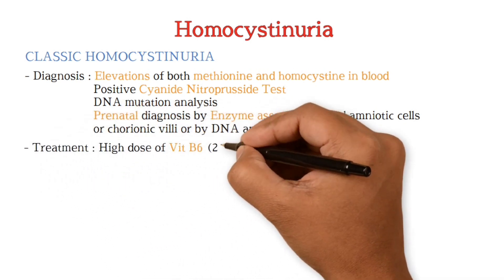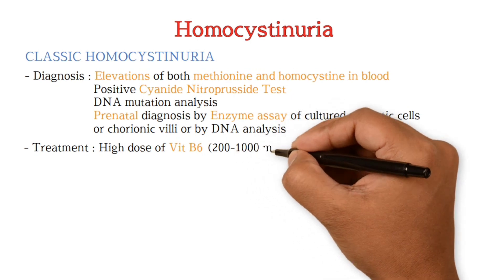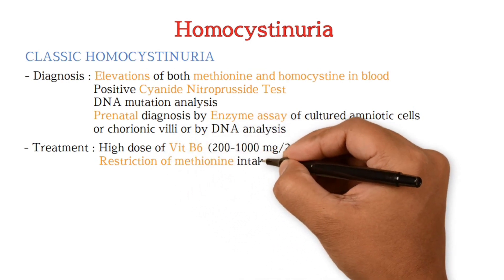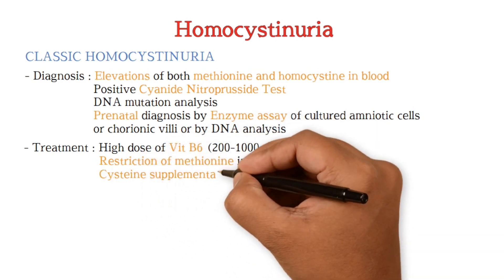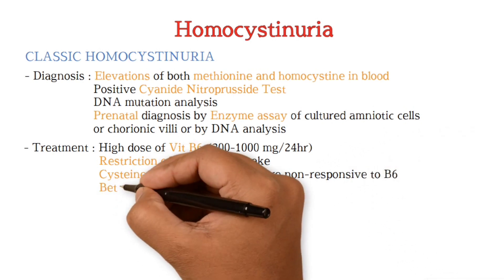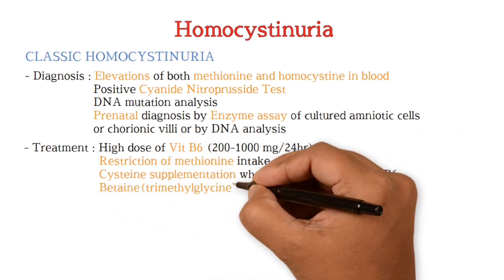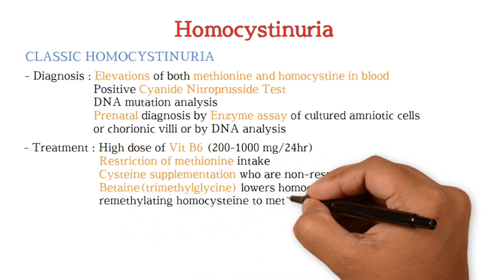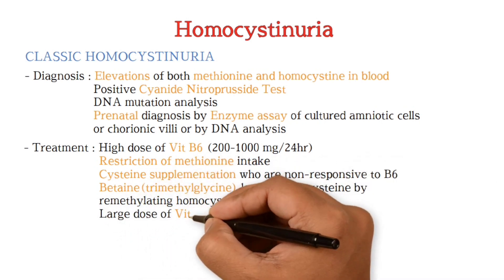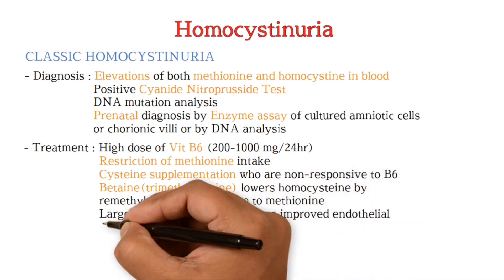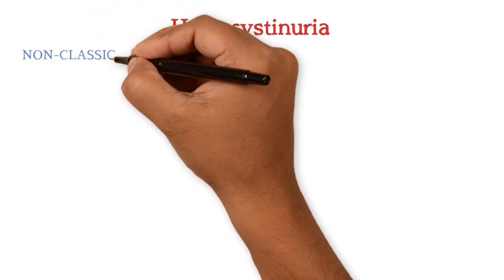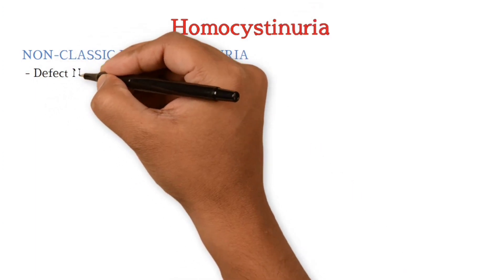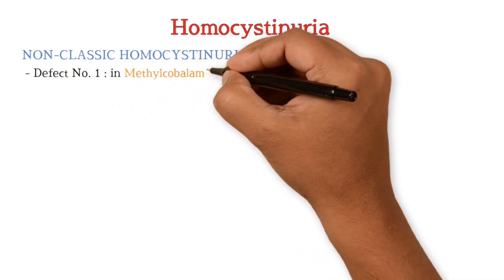Treatment includes high-dose vitamin B6, which within 24 hours causes improvement in most patients, along with restriction of methionine intake and cysteine supplementation. For those non-responsive to vitamin B6, betaine (trimethylglycine) lowers homocysteine by remethylating homocysteine to methionine. Large doses of vitamin C are also used for improvement of endothelial function.